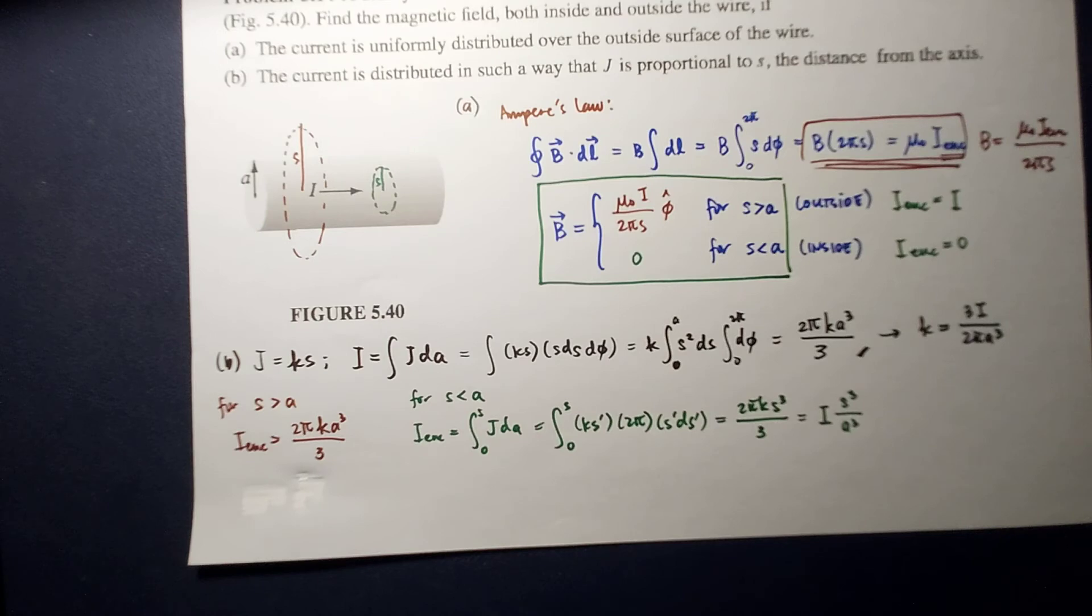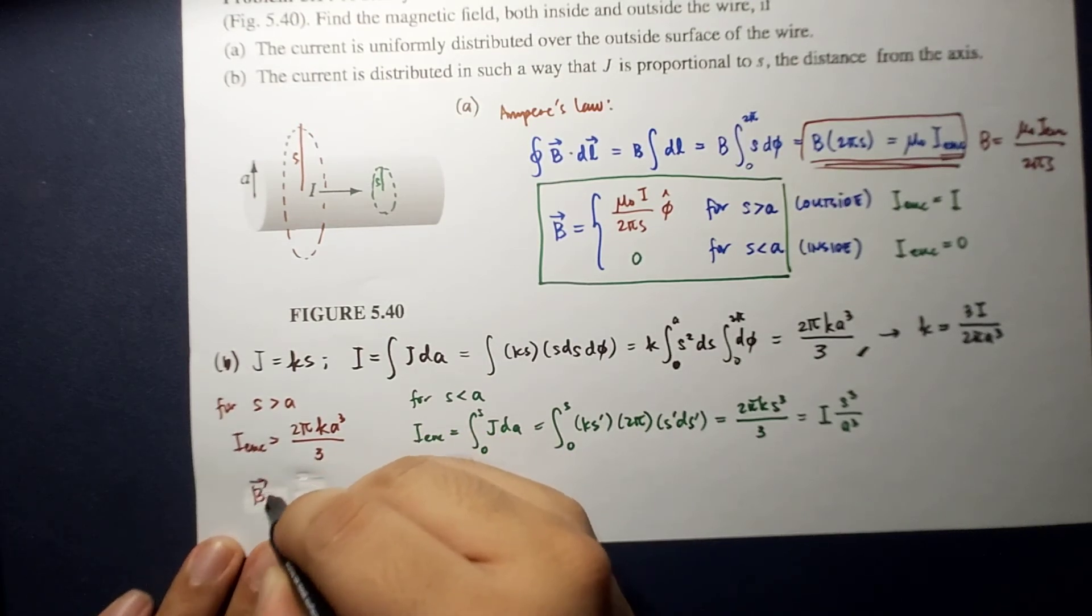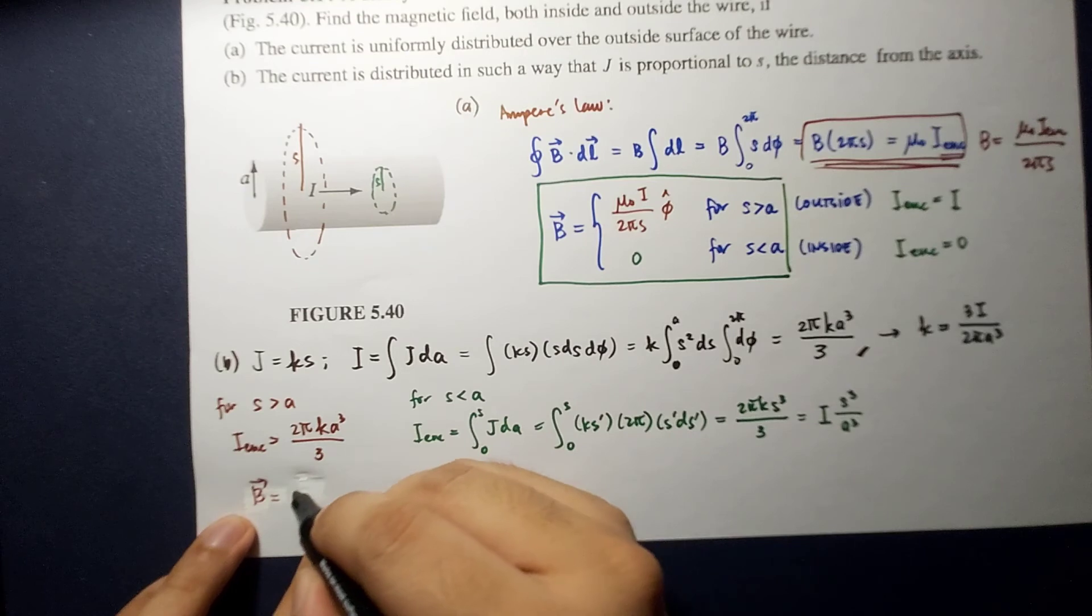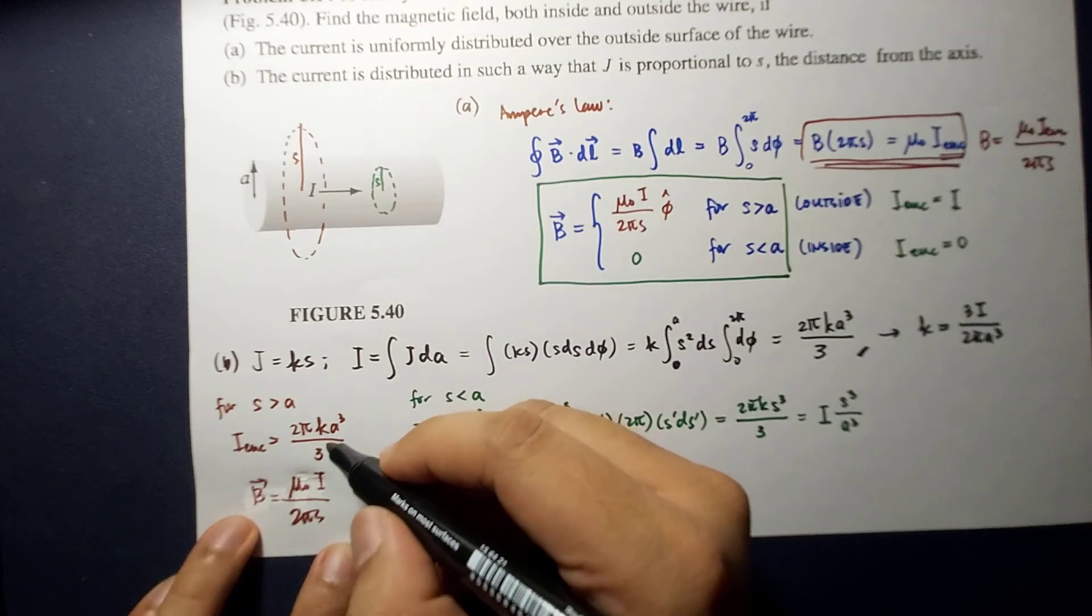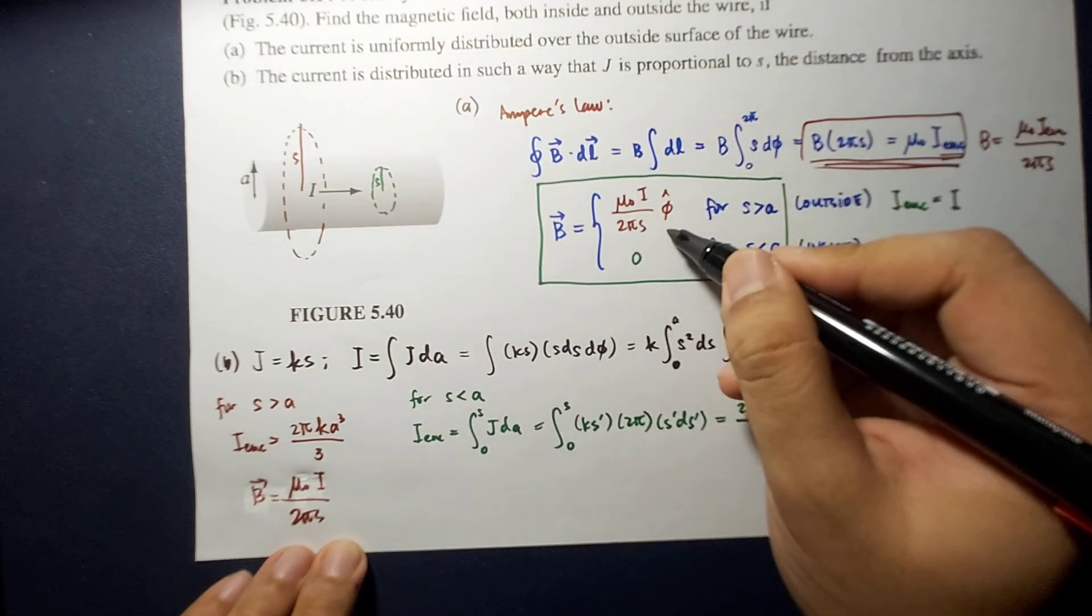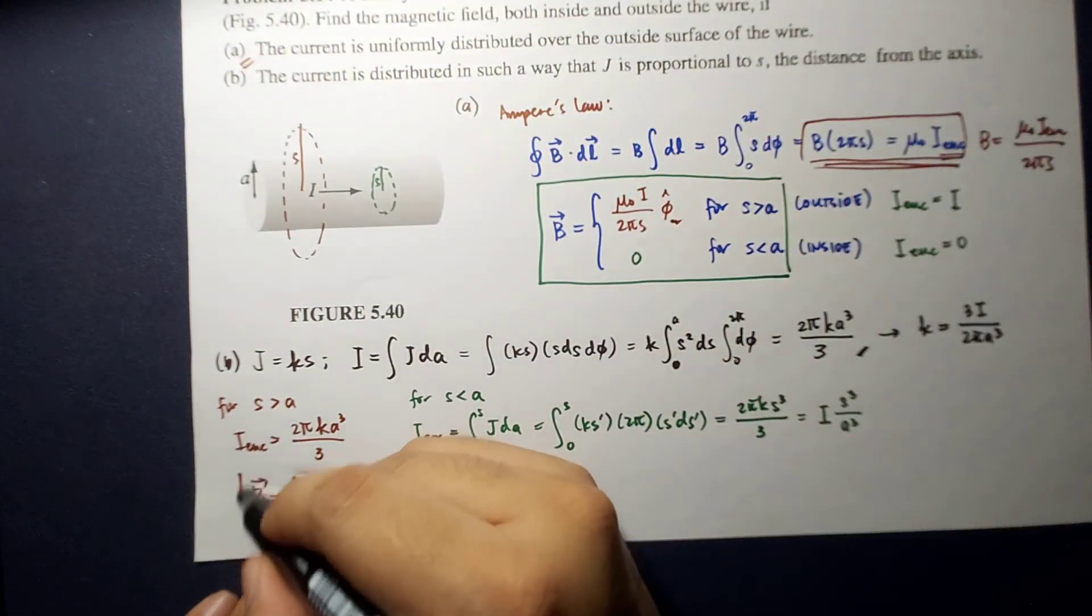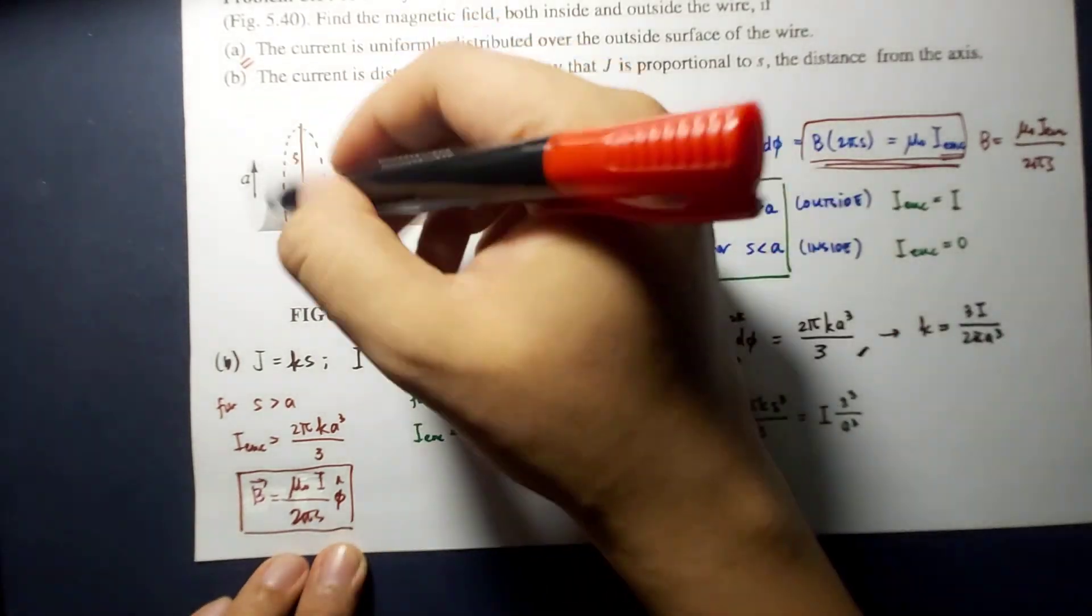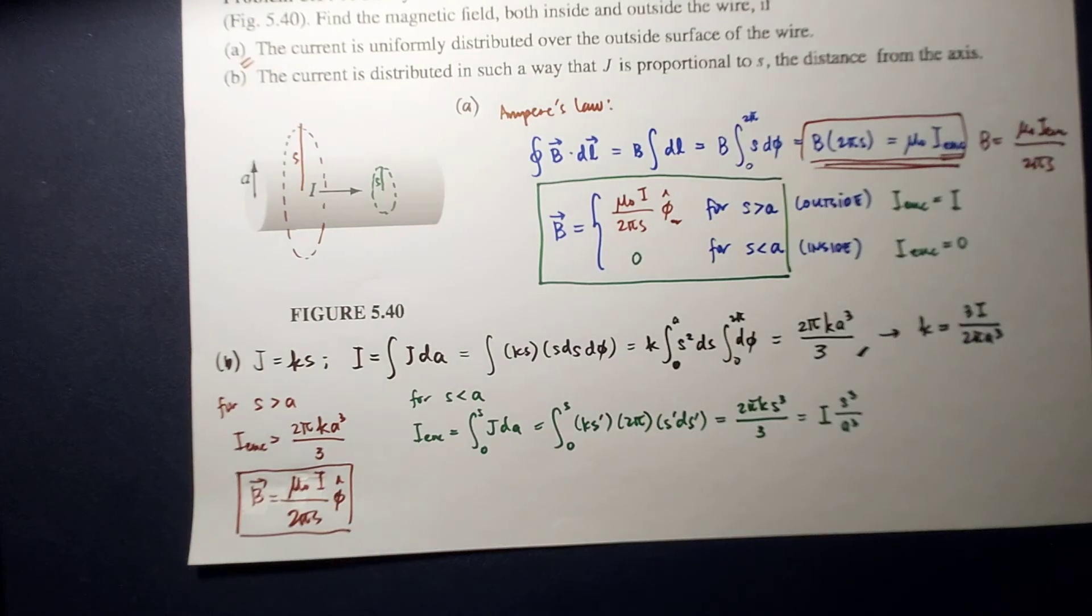Okay, so we can now summarize the following. So for points less than A, for points outside the current, the magnetic field would be equal to mu naught I over 2 pi S. Okay, it's the same result as your first one. Okay, because they both basically cover the whole current I. Okay,